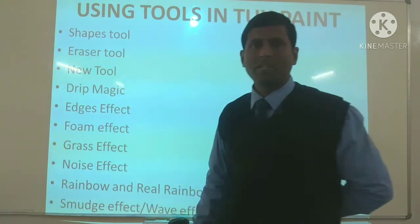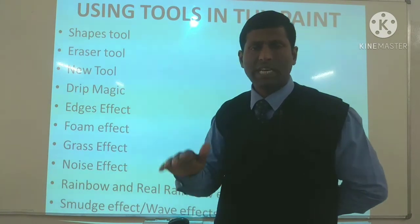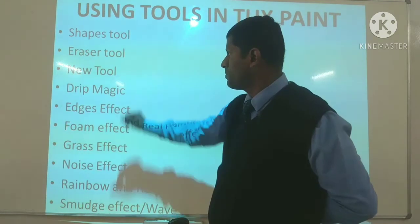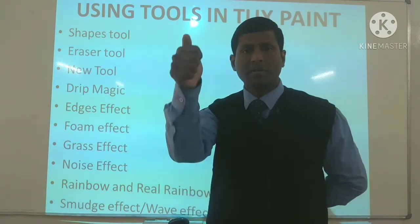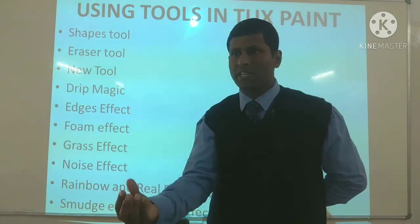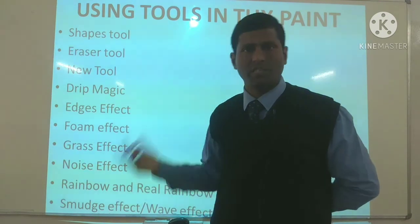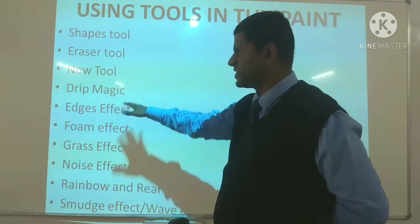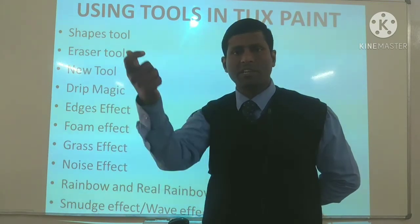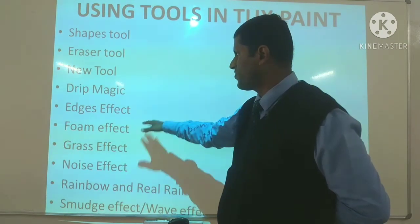Teen hai new tool — new tool ka matlab hota hai means new page, ek naya page aap le sakte hain. Drip magic — drip magic ka matlab, jaise paani kisi letter mein se kaise gir raha hai, is type ke kuch animations aapko dikhai denge, isme pehle se diya hua hai, jisko kaha gaya hai drip magic. Aap kuch cheez likhenge aur usme se aapko lagega ki is letter mein se paani gir raha hai — toh usko kaha gaya hai drip magic.